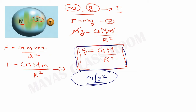Now this equation g equals GM divided by R squared — does the mass of the object appear in this equation? How does the mass of the object relate to G, M, or R?